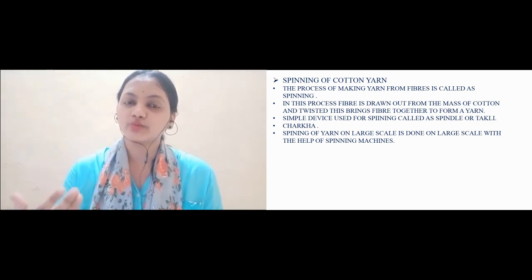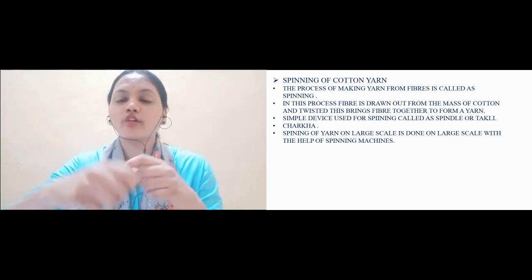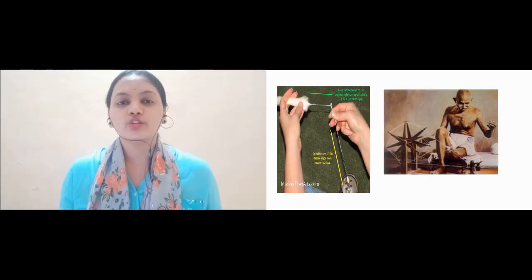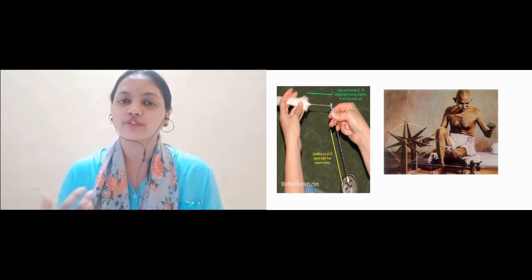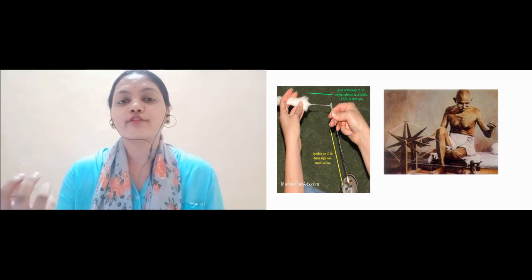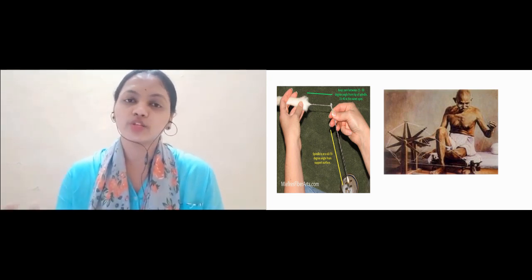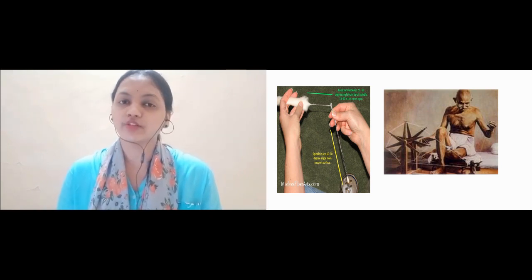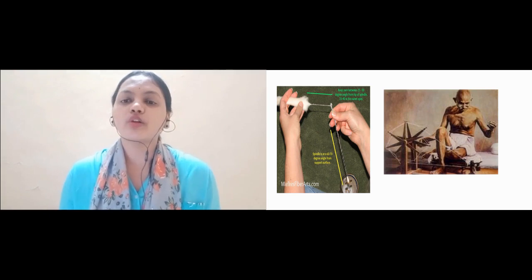There is one more method, by using charkha. Charkha can be used for spinning of cotton yarn. You know that this was introduced by Mahatma Gandhi for the first time to use our Swadeshi fiber, which is cotton. He was the first person to introduce the use of charkha in India.